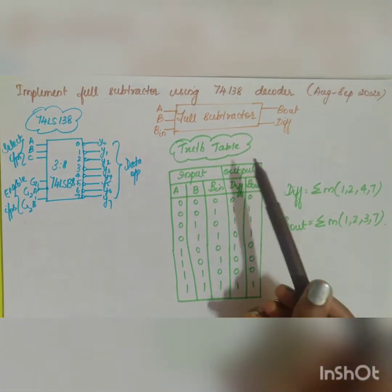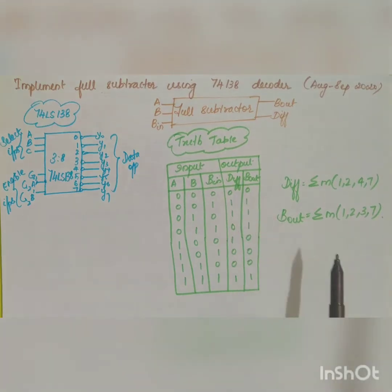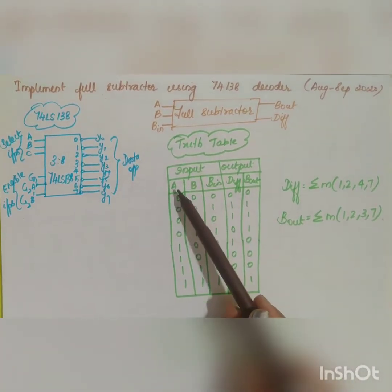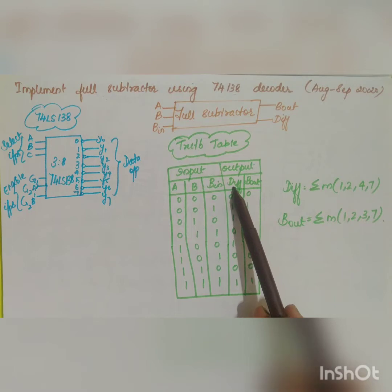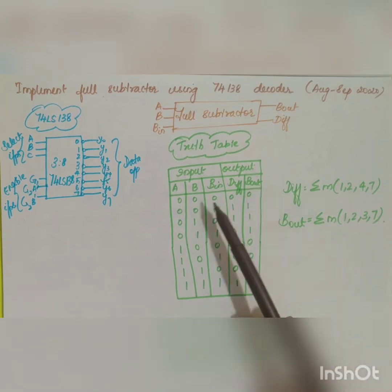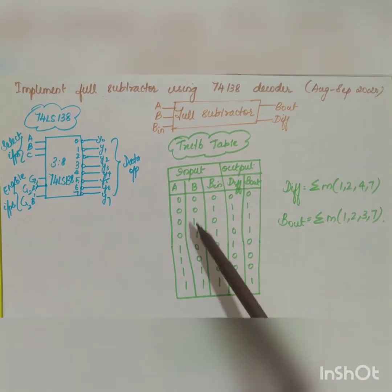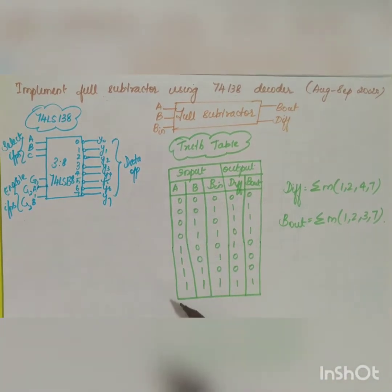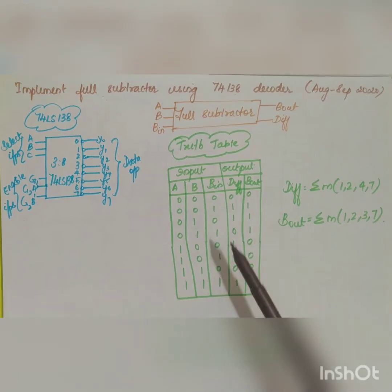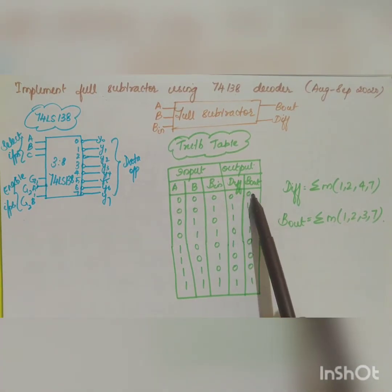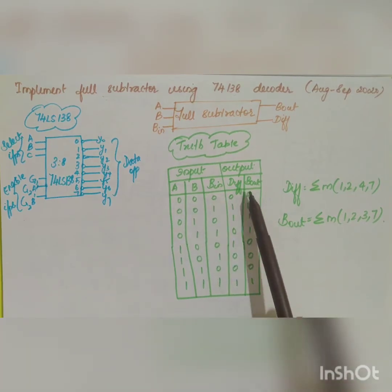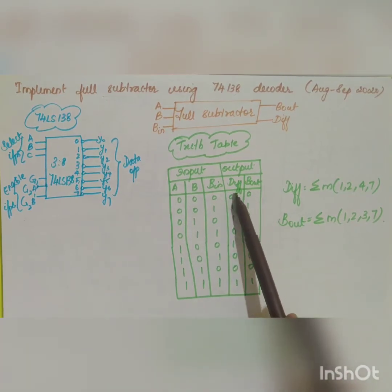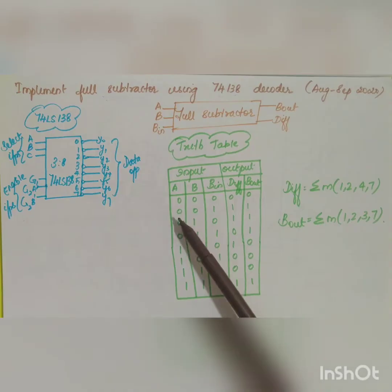The truth table of the full subtractor has inputs A, B, and Borrow-in, and outputs Difference and Borrow-out. For all combinations from 0-0-0 to 1-1-1: the first case is 0 minus 0 minus 0, giving Difference = 0 and Borrow-out = 0.